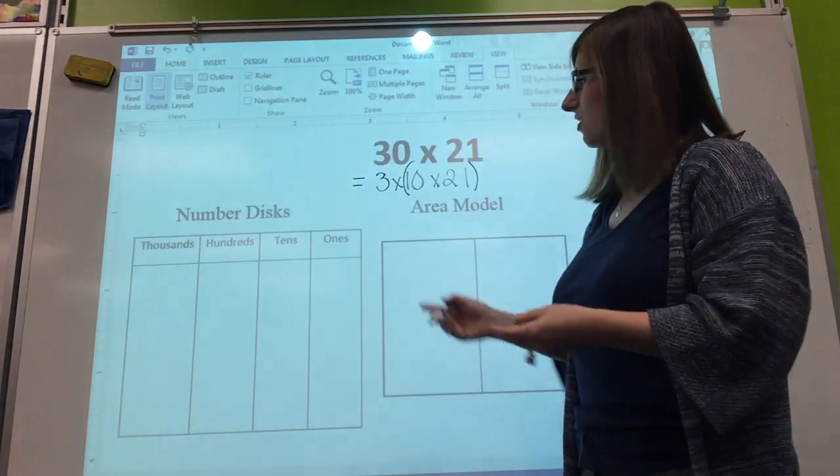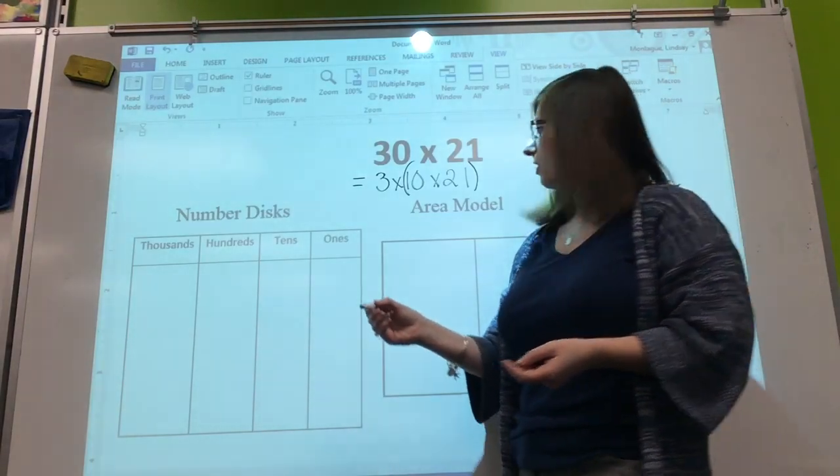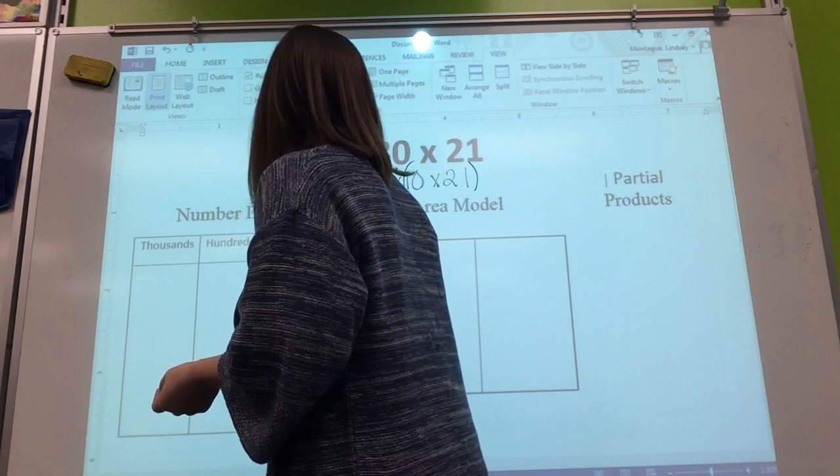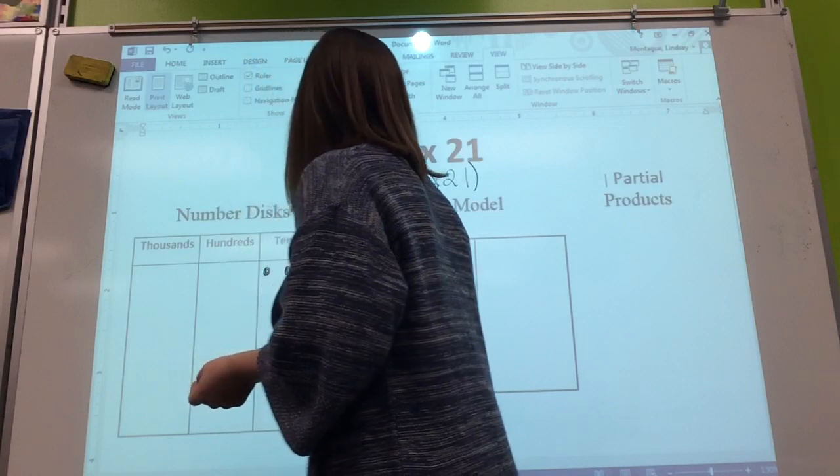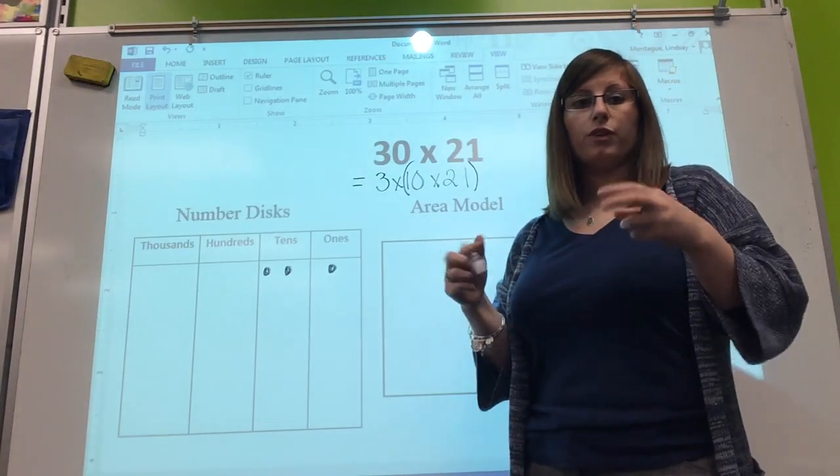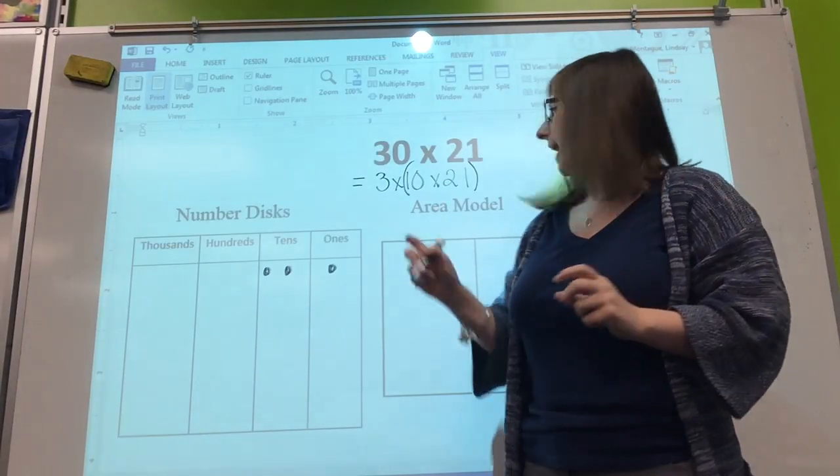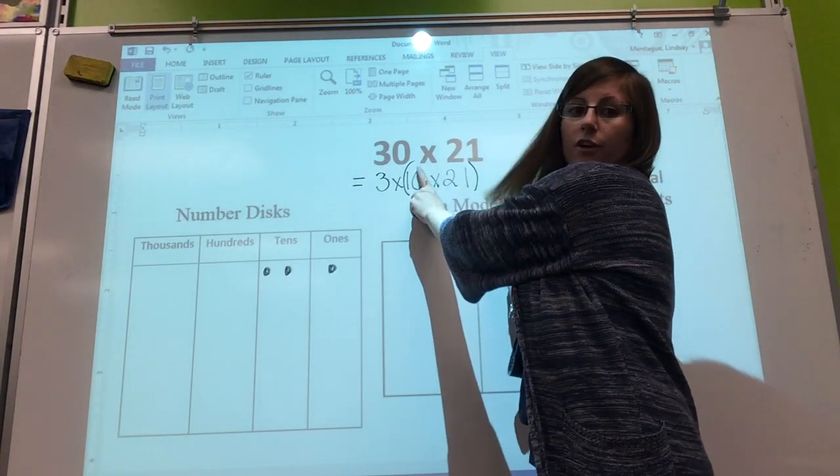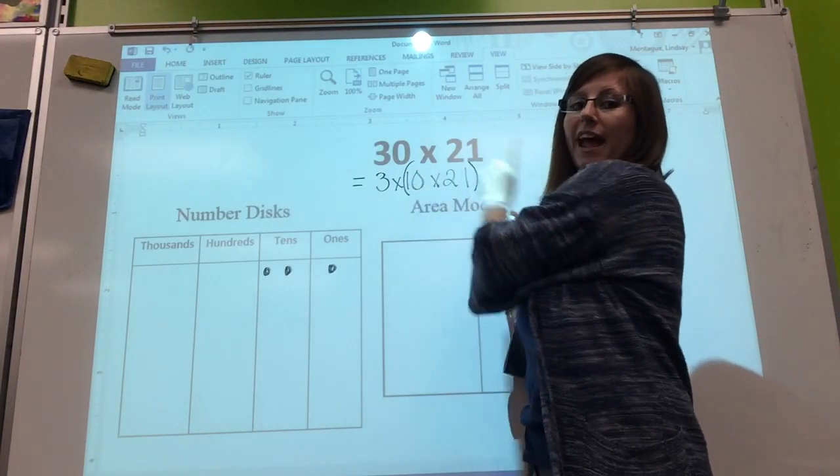On our number disks, I'm going to draw 21, so 2 in the tens, 1 in the ones. We're multiplying that by 10. We've learned the trick that we can just add a 0 after the 21, cover up the 0 and the 10, multiply by 1, and then add the 0 to our answer.